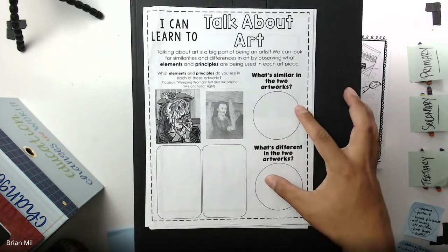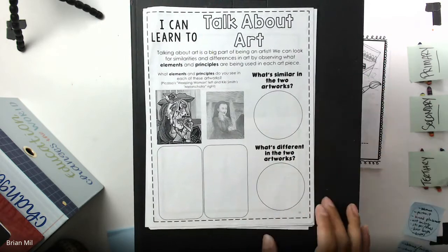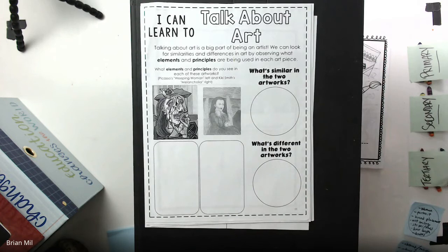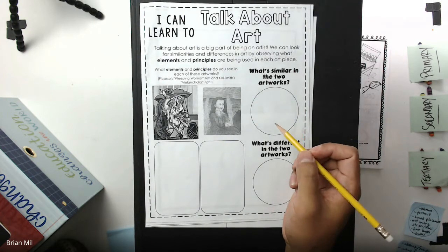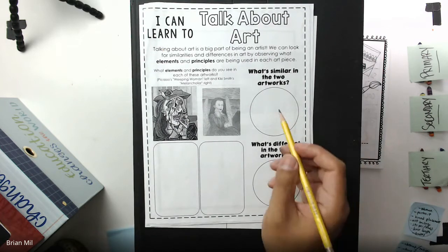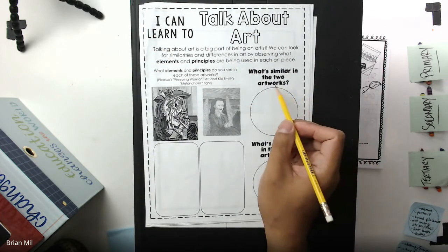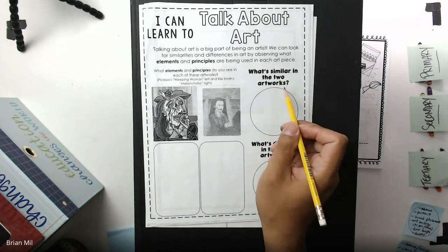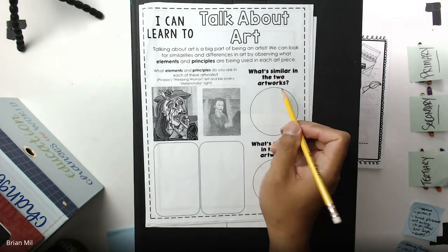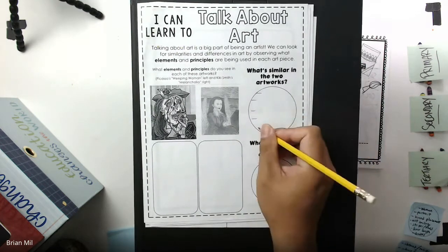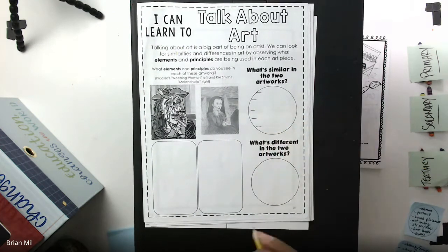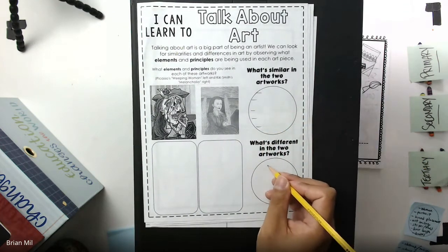Let's talk about these two circles right here. We're going to fill out these circles — we can use a pencil or pen, doesn't matter. We're not going to draw anything particular; we're just going to be writing down what we see. The first question asks what's similar in the two artworks, so I'm going to create maybe five bullet points. And then the next question asks what's different in the two artworks, and I'll do the same thing.